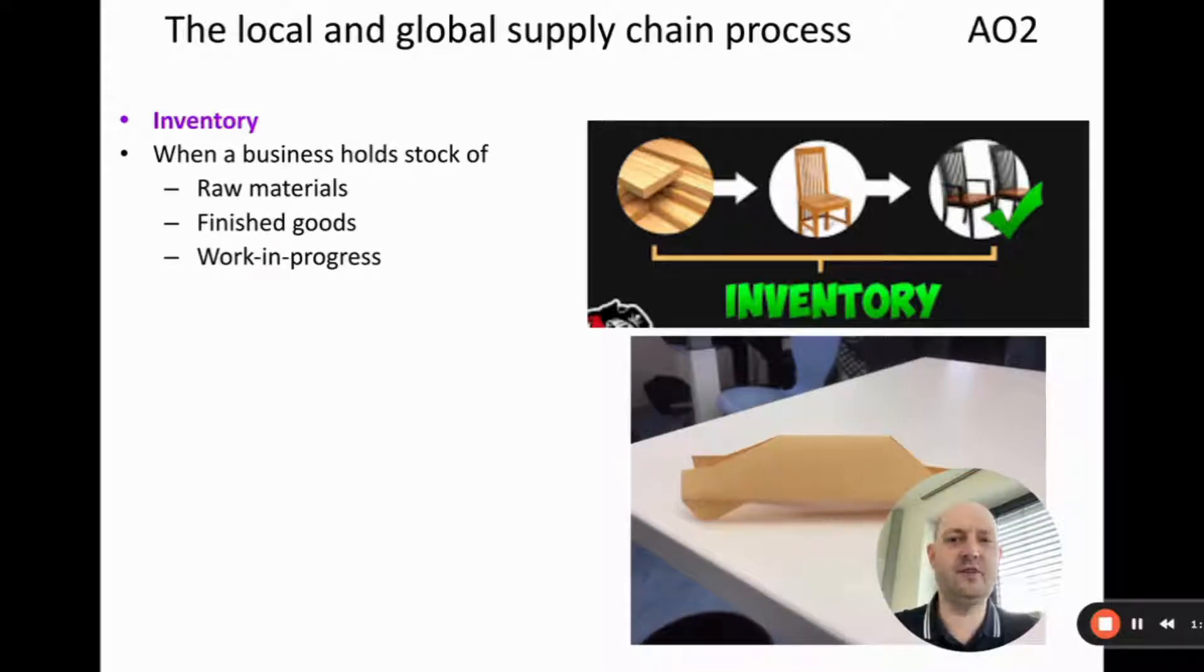First, we're going to define the term inventory. This is when a business holds stock of raw materials, finished goods, and work-in-progress. Quick thing on terminology - this word inventory is the same as the word stock. I tend to use the word stock, but I also use inventory. I think inventory is better because stock we've also got the term stocks and shares, which we did previously in the syllabus.